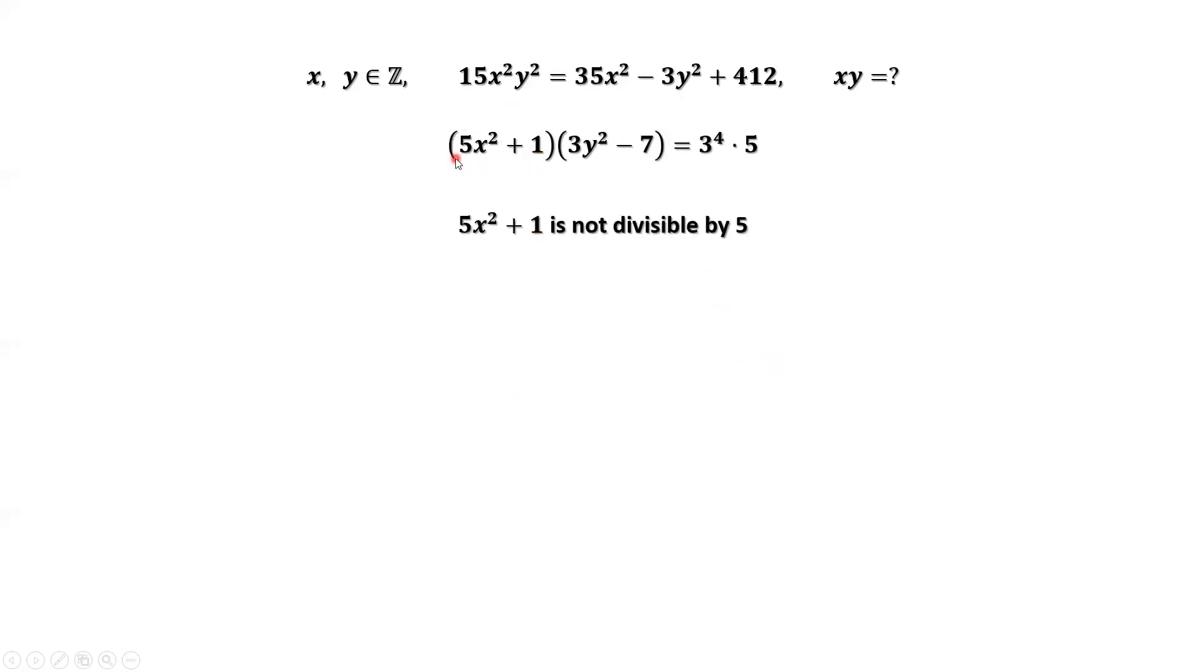The first factor is not divisible by 5. The second factor is not divisible by 3. What does this mean? This means the first factor does not have 5 as a factor, only has 3 as a factor. The second factor does not have 3 as a factor, only has 5 as a factor.